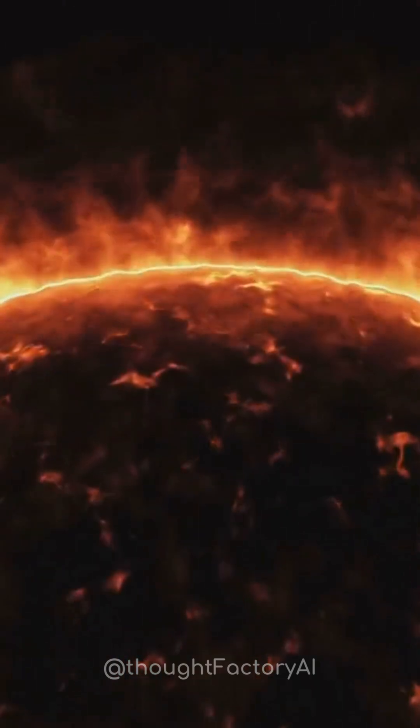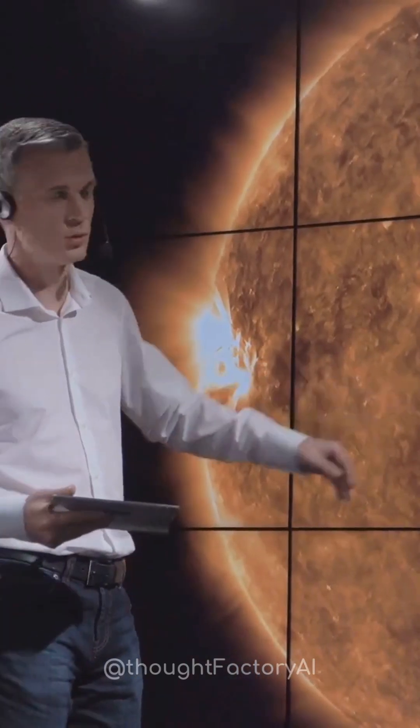Right now, the sun is about halfway through its hydrogen fuel. Scientists estimate it has about 5 billion years left before it runs out of hydrogen.